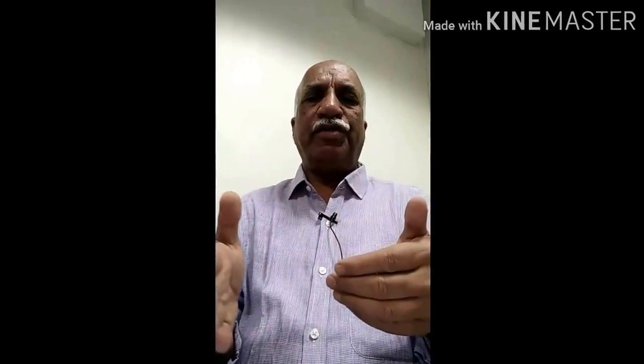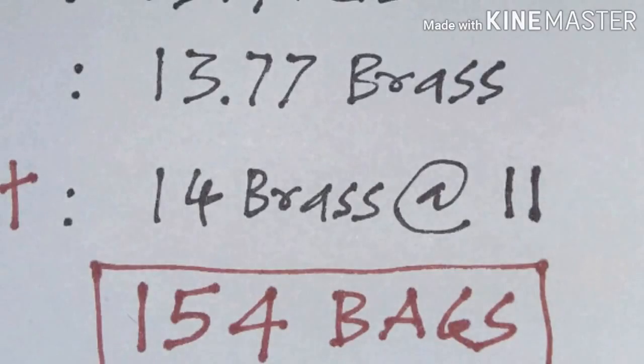As established in our previous video, for M20 concrete with a slab thickness of 150 mm, we need 11 bags of cement per brass. So for 14 brass: 14 multiplied by 11 equals 154 bags of cement.